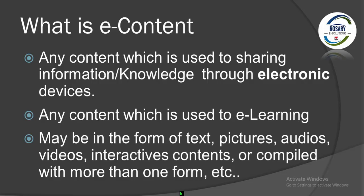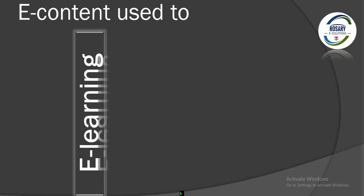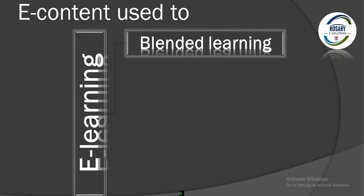E-content is any content which is used to share information or knowledge through electronic devices — this is e-content, used for e-learning. This includes text, picture, audio, video, and interactive content. All of these things can be done through e-content, which is used in blended learning.